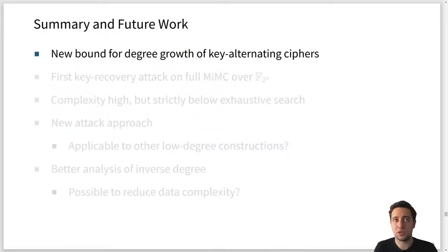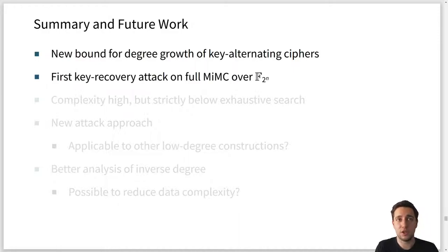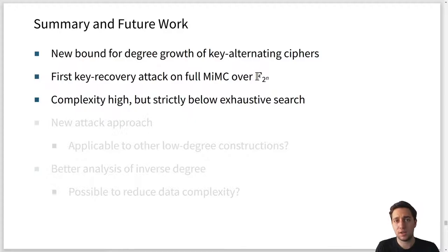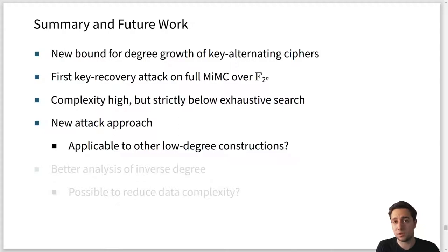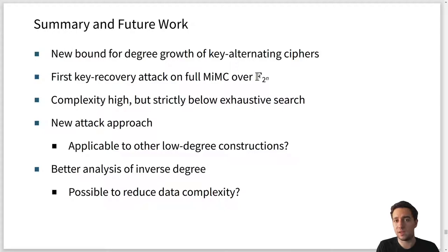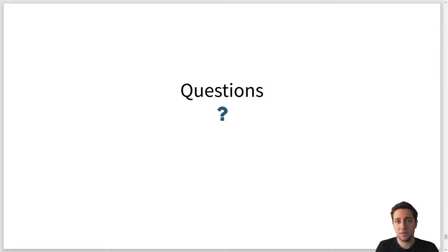As a summary: the first result was a new bound for the degree growth of key alternating ciphers — and MiMC is one of these — showing that it actually grows linearly, not exponentially. We also give the first key recovery attack on full MiMC over binary fields; the attack does not work over prime fields, because we don't know of any non-trivial subspaces of prime fields, which is possible for binary fields. The complexity of the attack is quite high but strictly below exhaustive search. It is a new attack approach, potentially applicable to other low-degree constructions. In the future, we may be able to better analyze the growth of the inverse degree, which would allow us to reduce the data complexity needed for the attack. Thank you very much for your attention.